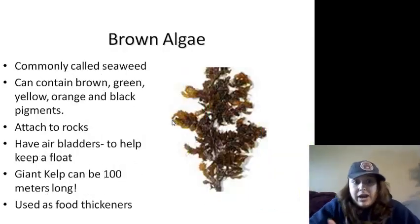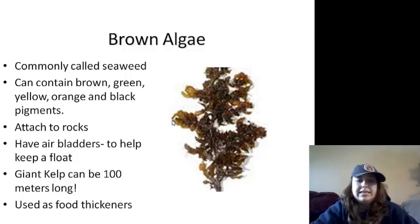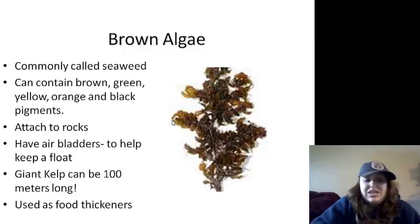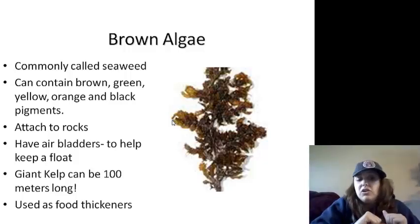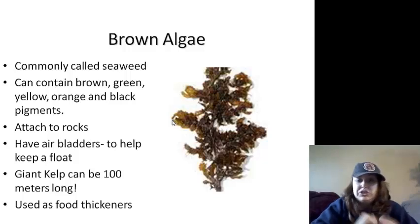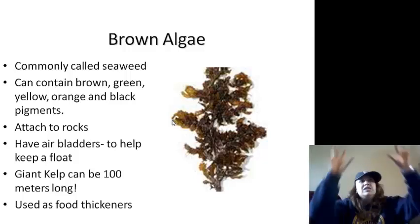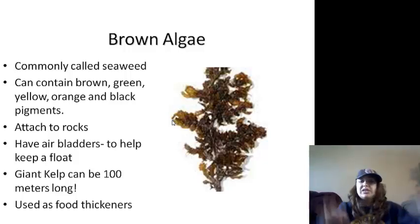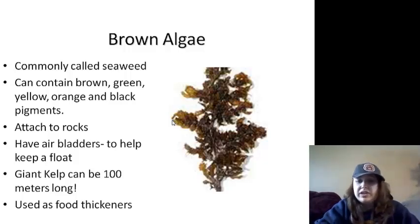Brown algae, commonly known as seaweed. It can contain brown, green, yellow, orange, or black pigments. They attach to rocks and have air bladders to help them keep afloat. They are also known as giant kelp, which can be over 100 meters long. If you've ever watched underwater adventures, you might have seen these huge kelp forests just hanging down everywhere — that's brown algae. They are also used as food thickeners.